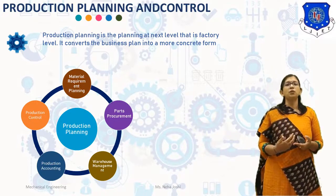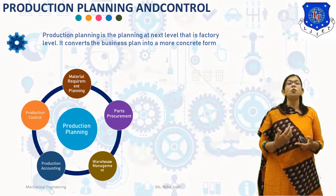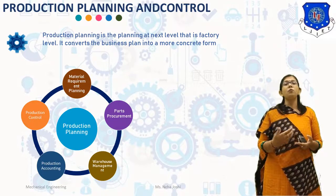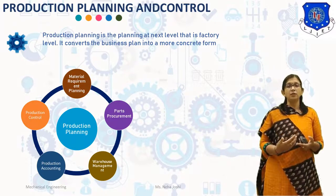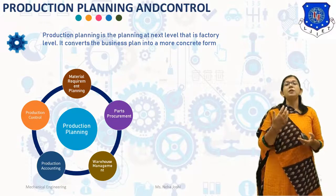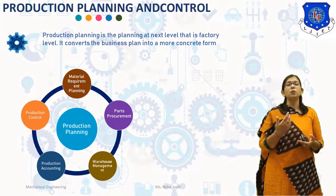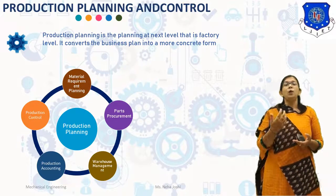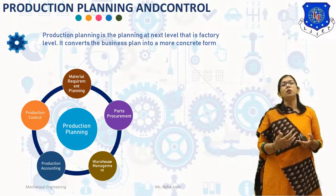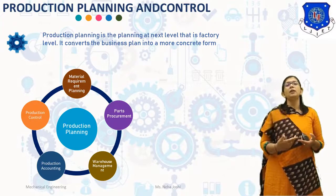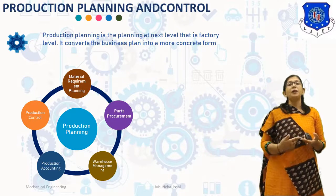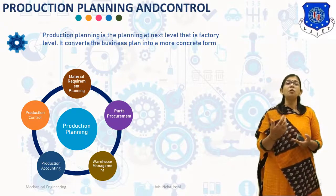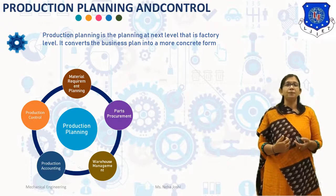It is futile to plan the production if there is no control of the factory resources; it is ineffective to control the factory resources if there is no plan against which the progress of the factory can be compared. Production Planning and Control includes Material Requirement Planning, Parts Procurement, Warehouse Management, Production Accounting, and Production Control.